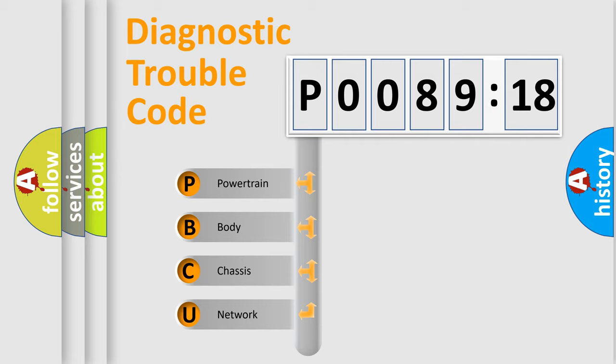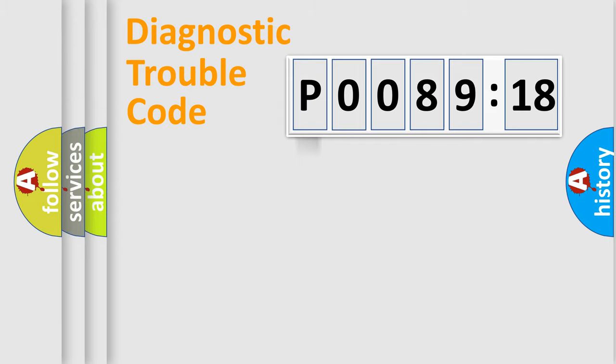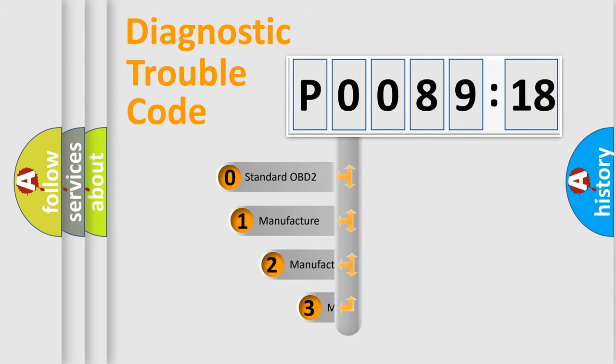We divide the electric system of automobile into four basic units: Powertrain, body, chassis, and network. This distribution is defined in the first character code.